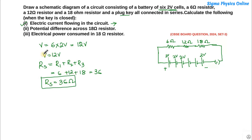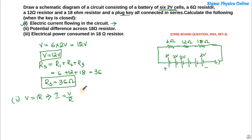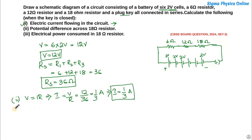So here we have the equivalent resistance of the circuit and the potential difference of the entire circuit. To find out the current flowing, we will use Ohm's law: V equals IR. So current I equals V divided by R, which is 12 divided by 36, which is 1/3 ampere. So our current in the circuit is 1/3 ampere. This is your first answer.